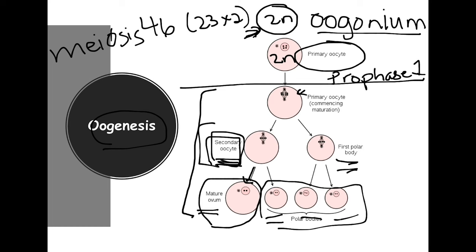At the end of oogenesis, one oogonium ends up making only one egg that is functional and three polar bodies. Men can make four sperm from one spermatogonium and all four can potentially be functional. But with women, only one egg is functional after the process of oogenesis. It's actually quite interesting to see that.